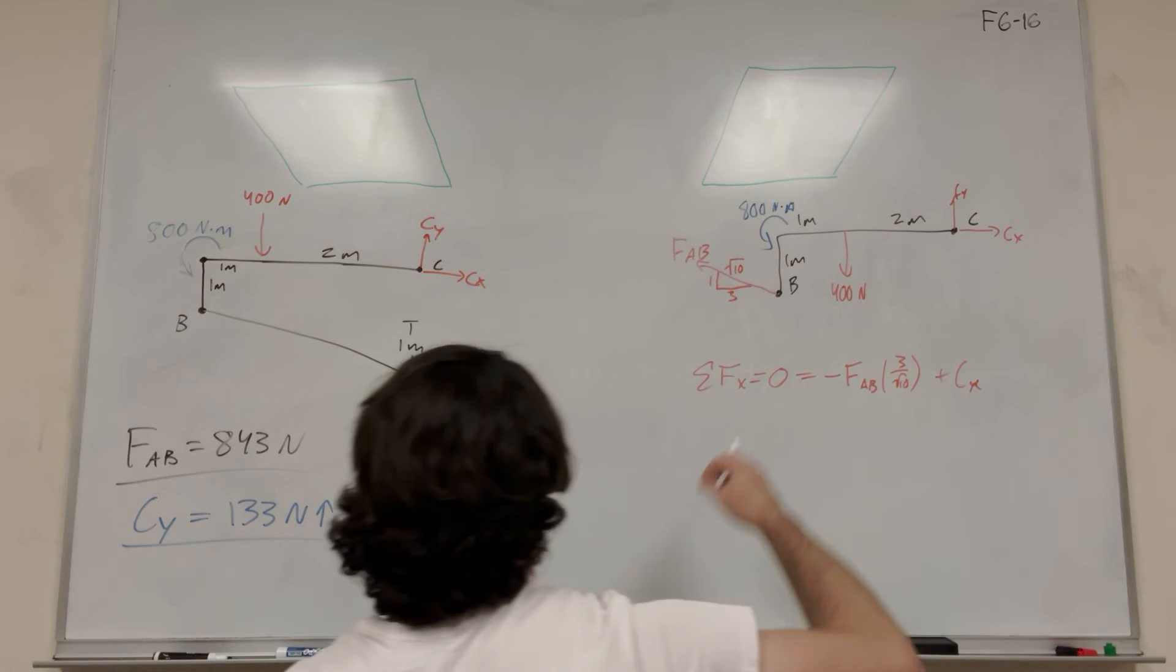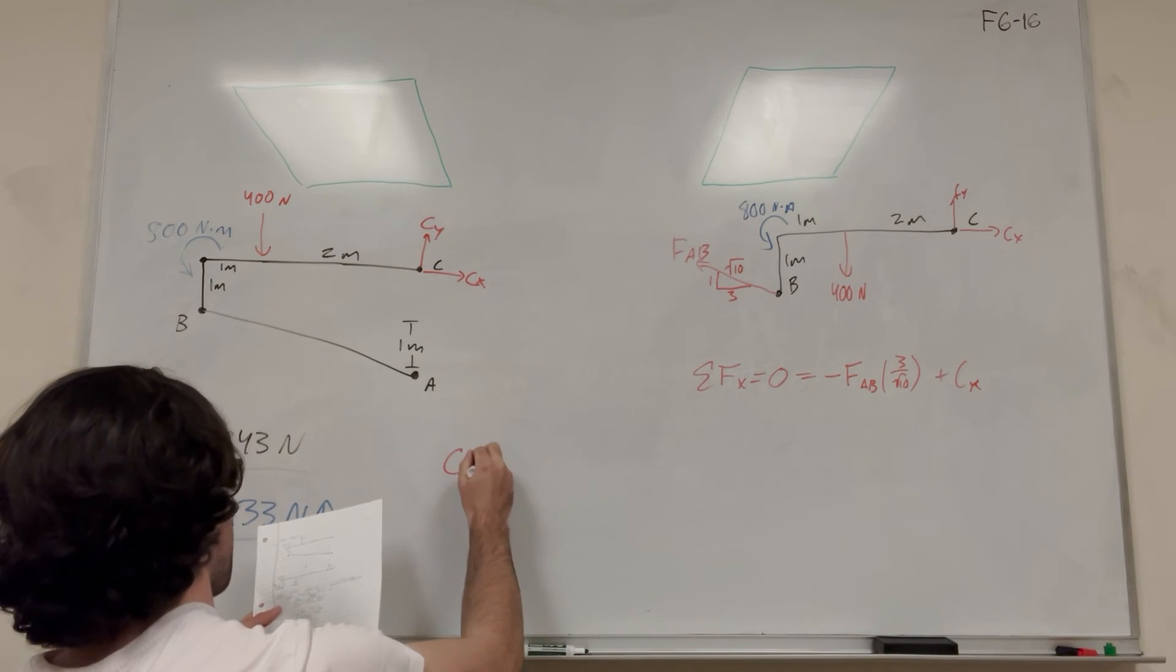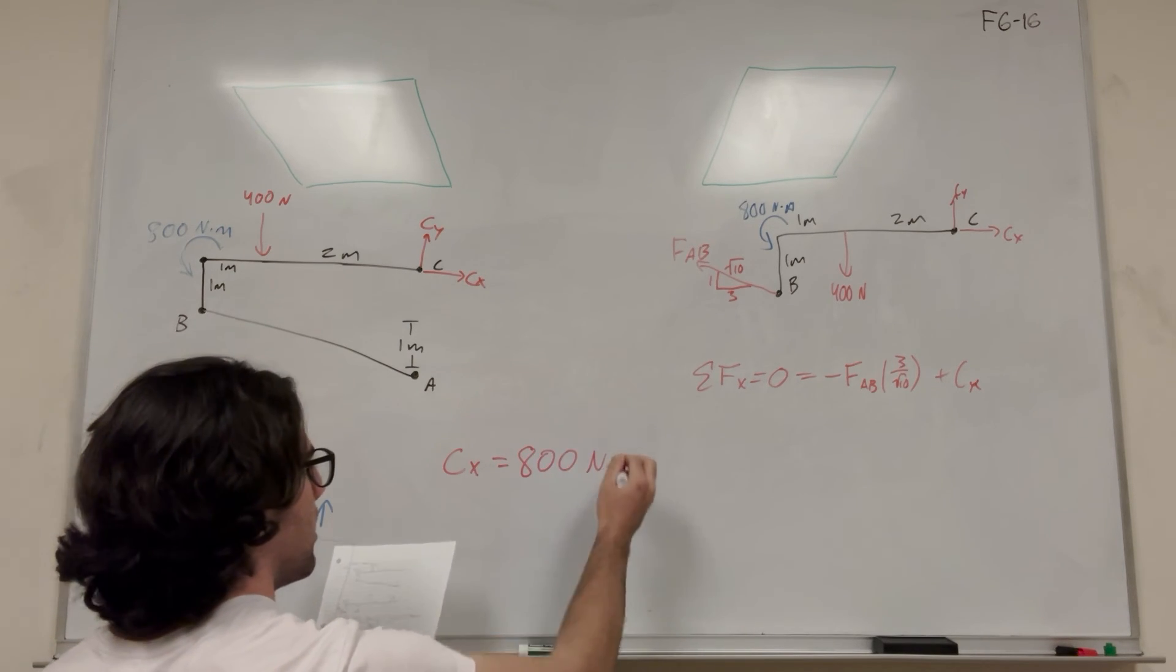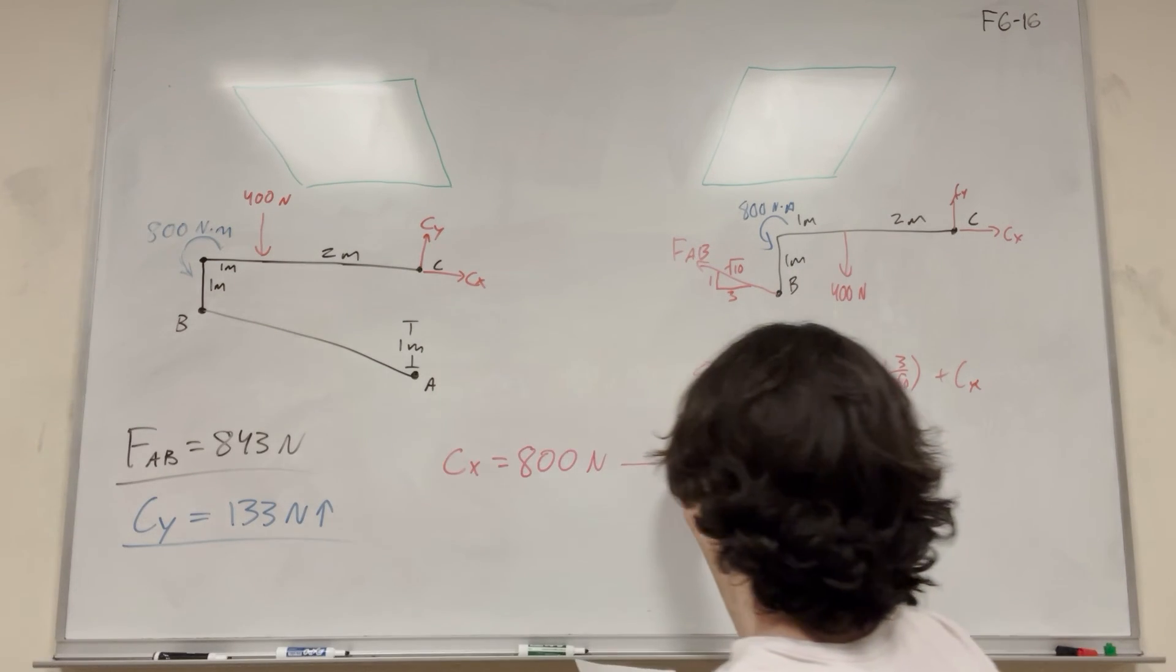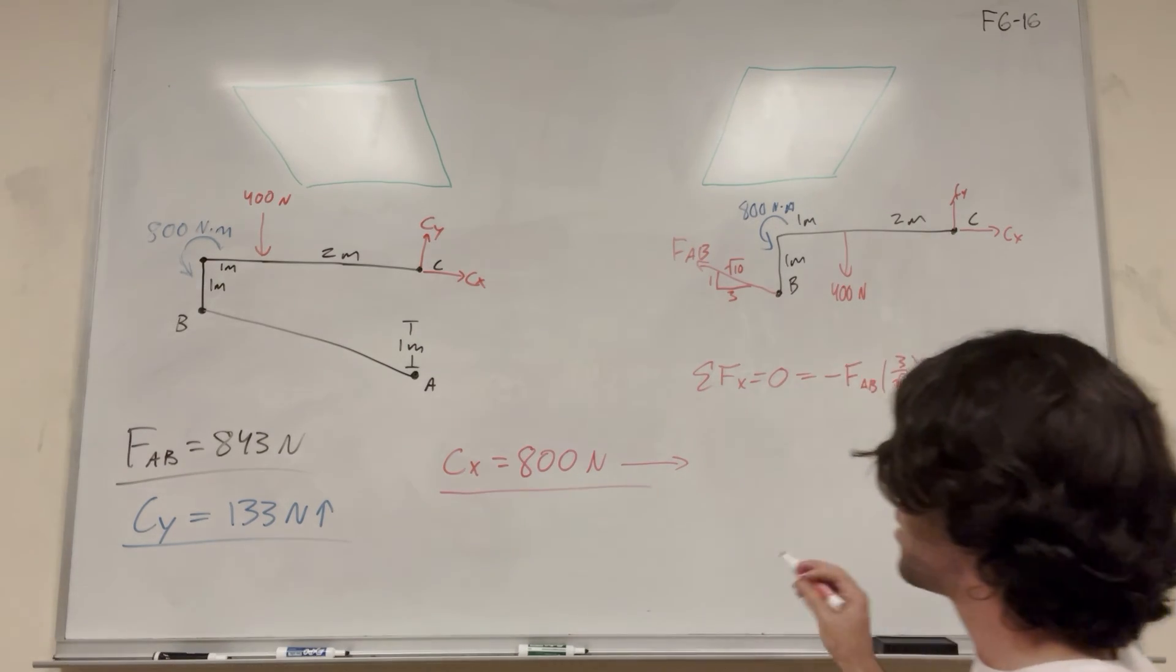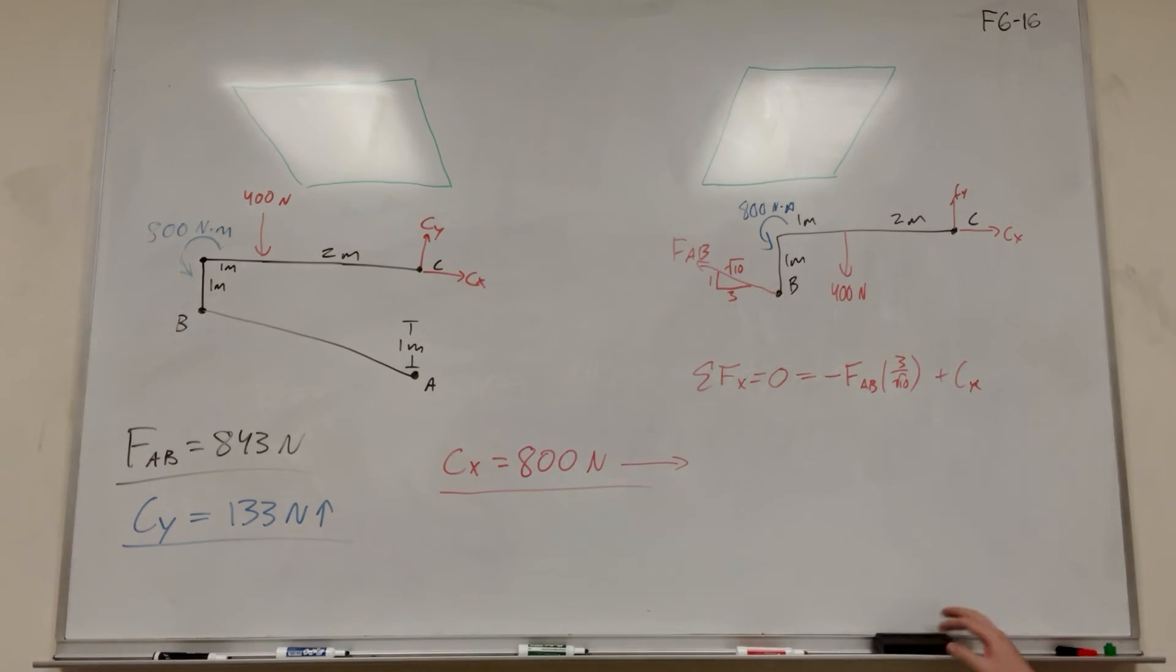And then Cx points in the positive direction. So plus Cx. So of course you just move Cx over. Then you get Cx equals 800 newtons flat. And we know it's pointing to the right because that's what we said and it's a positive number.